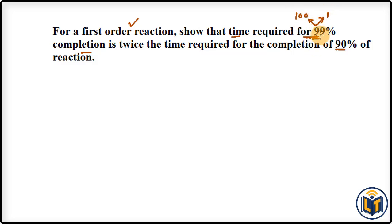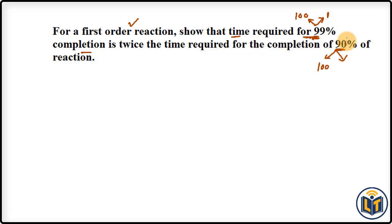Similarly, for the second reaction getting completed by 90%, the initial amount is 100 and the remaining amount is 100 minus 90, which equals 10. This is the final amount.